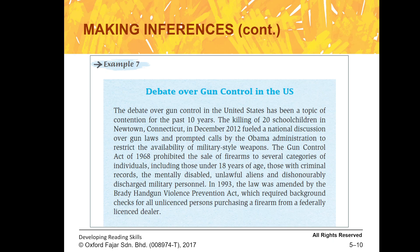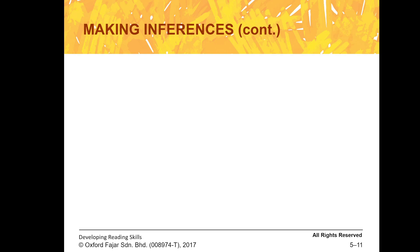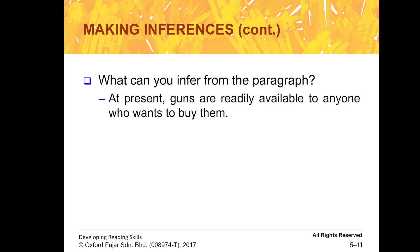Here is another example using a passage we have looked at before. The title is about the debate over gun control in the US. All the details talk about the rules, the situation, and what measures have been put forward to control the selling of guns in the US. What can you infer from that? At present, guns are readily available to anyone who wants to buy them. There are clues in the text that provide that information.